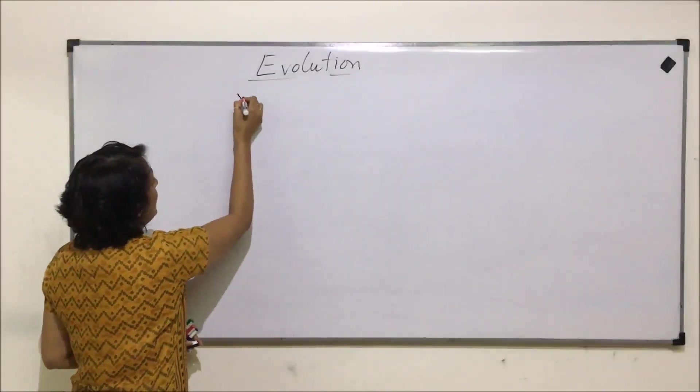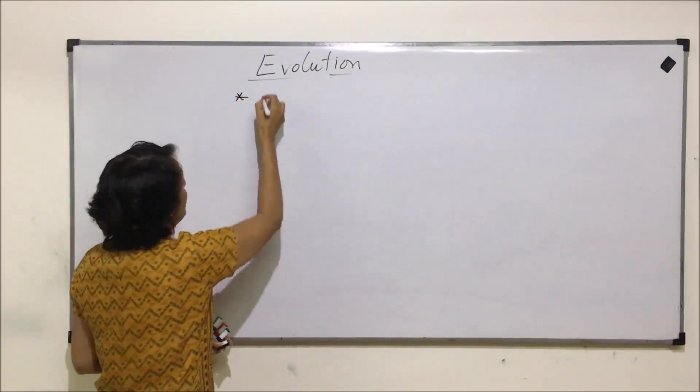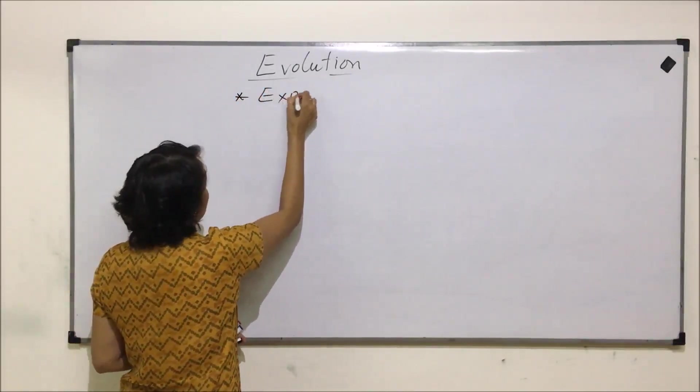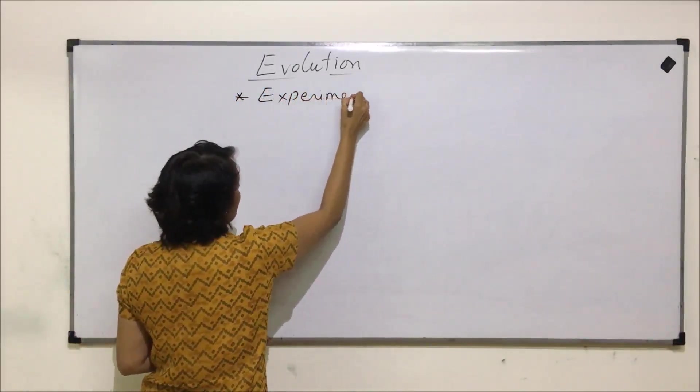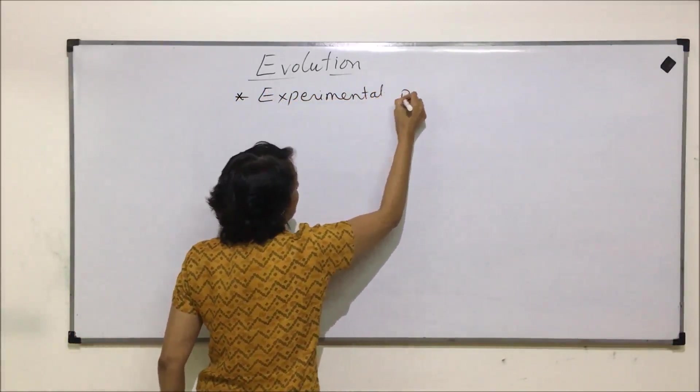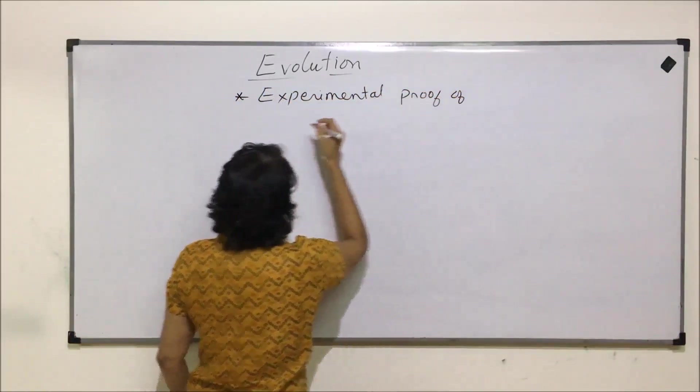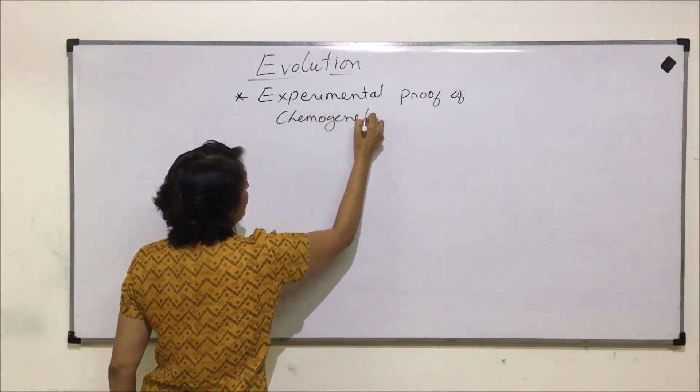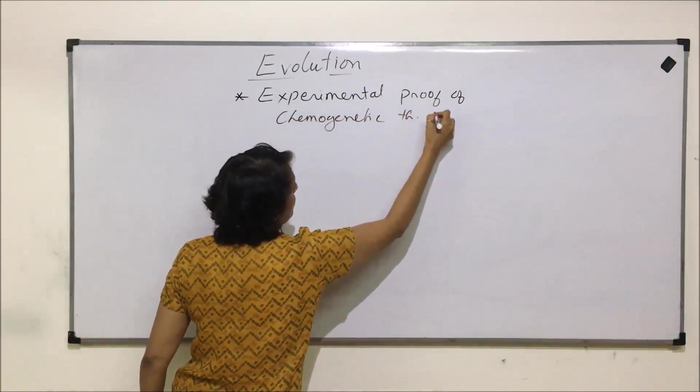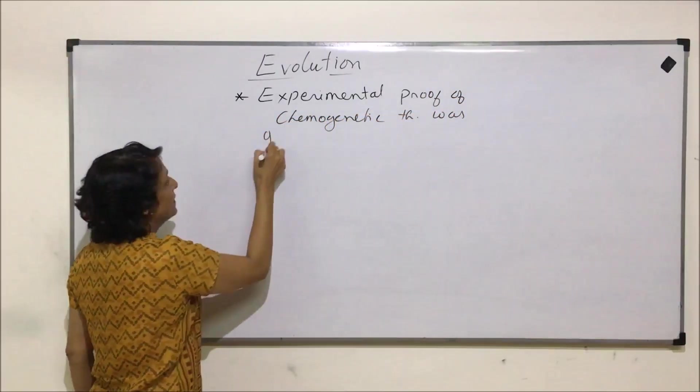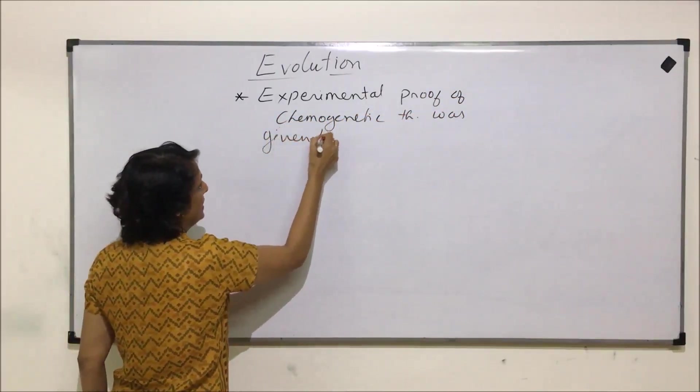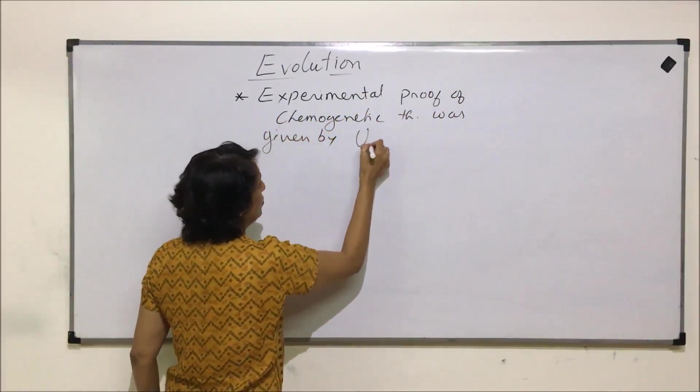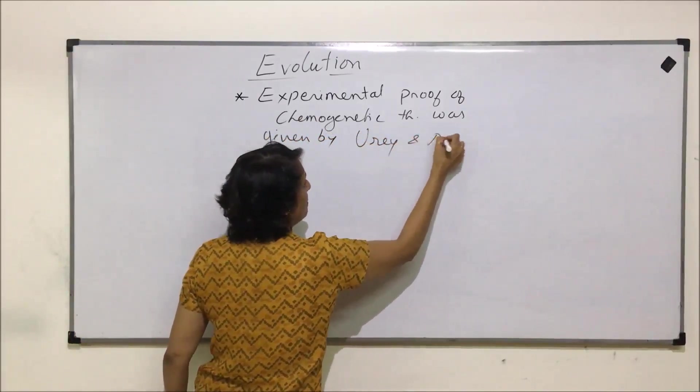It was experimentally proved by two scientists Urey and Miller. So the experimental proof of chemogenetic theory was given by two scientists Urey and Miller.